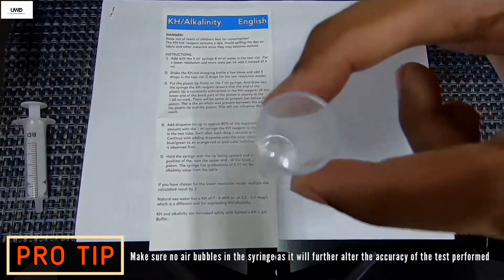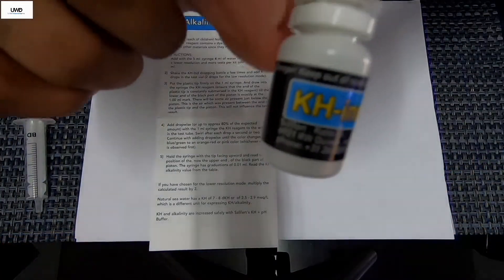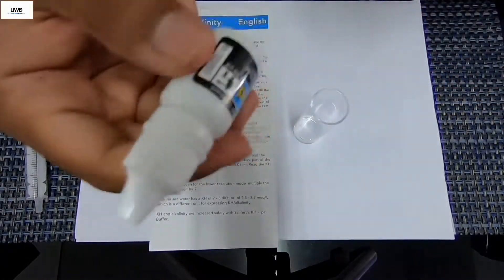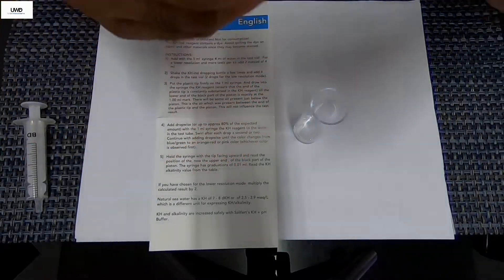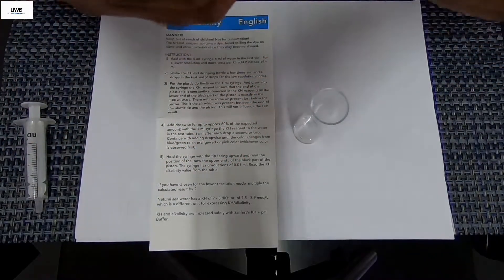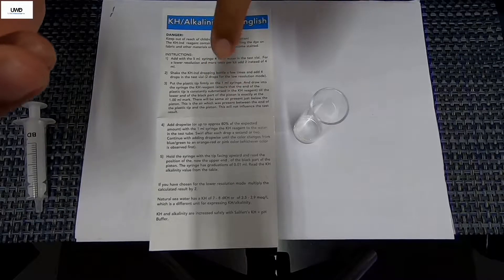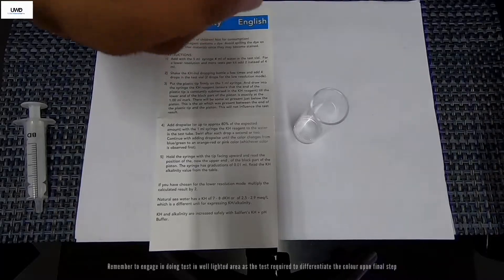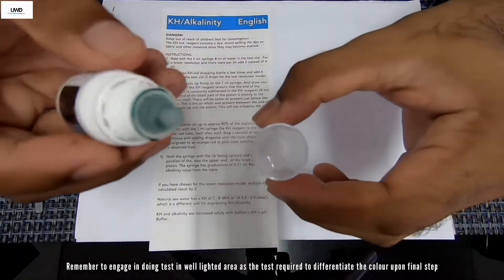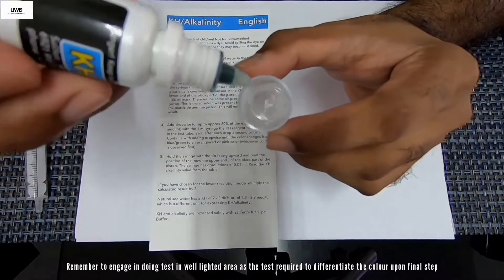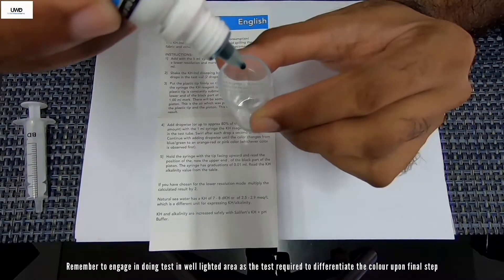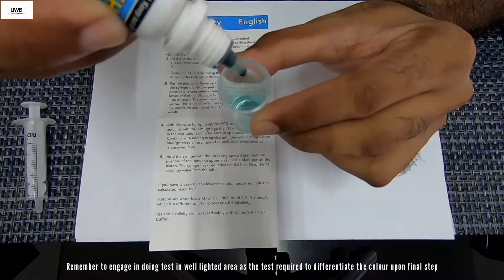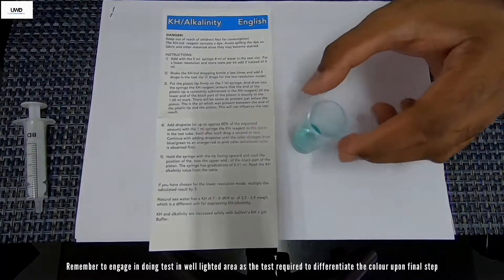Put aside this big syringe. Now we're going to take this KH indicator here, I'm going to give some small shake like this a few times just to mix it up. According to this pamphlet or booklet manual given here, I'm going to be putting four drops. One, two, three, four.